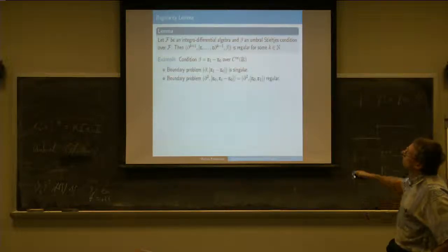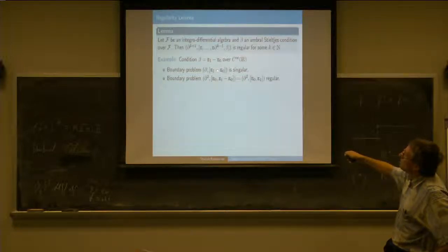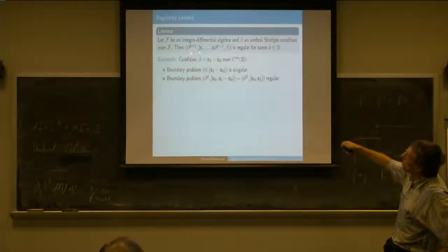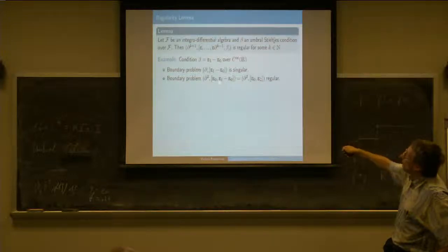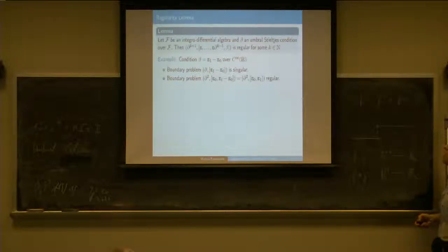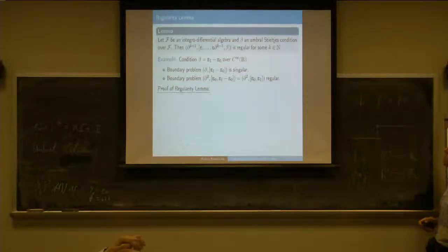A typical case would be when you take beta as e_1 minus e_0: that is singular, so you have to do some work. You have to raise D a bit more, like to D-squared, and add e_0, and then you get a regular problem. The point is this always works if you use k high enough, provided that beta is an umbral character.